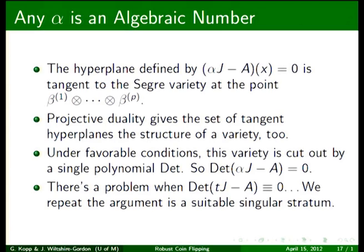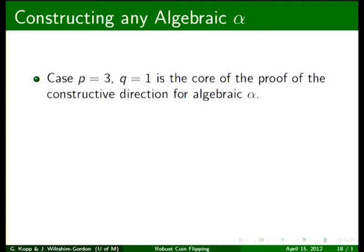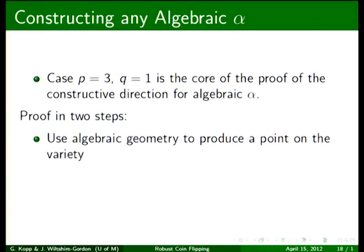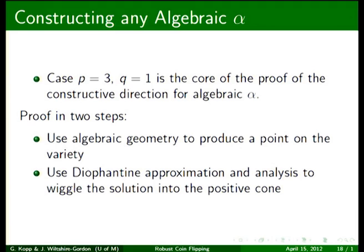Okay, in the next direction, we've shown that alpha has to be algebraic, but can we obtain any algebraic number for alpha? And so the construction, the crux of the construction rests on the case when Alice has three random sources, and one of them is faulty. And we do the proof in two steps. We use algebraic geometry to find a point on the suitable variety, and then we use trickiness to try to move the point so that its coordinates are actual positive numbers that can be programmed into probability distributions. Now, the first step of this proof is very rigid. But once you're on the variety, it's not so hard to move the point around.